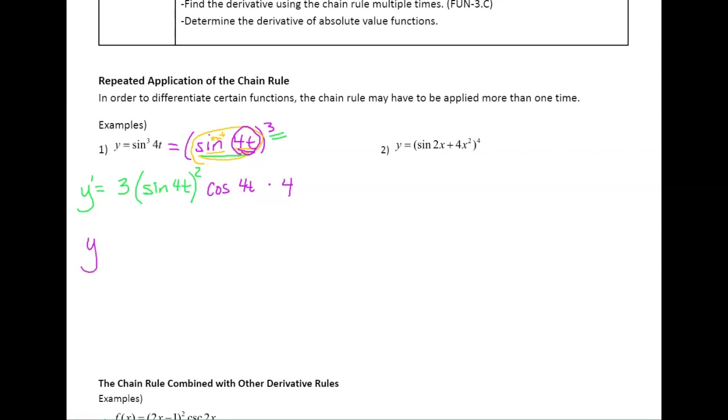So the only thing we can really do is multiply the three and the four. You can write your squared, you don't have to, and that's it. All of these are being multiplied. Perfect. All right, so let's look at number two.